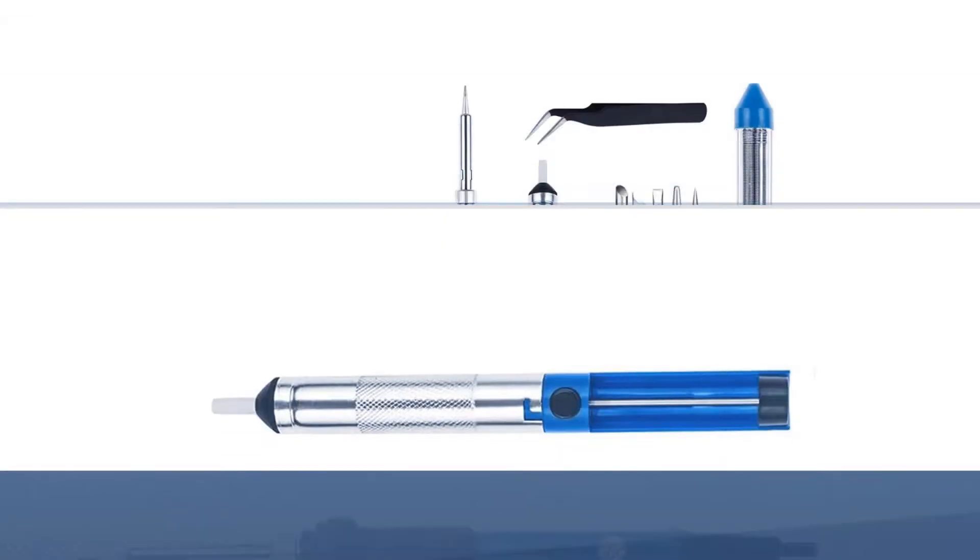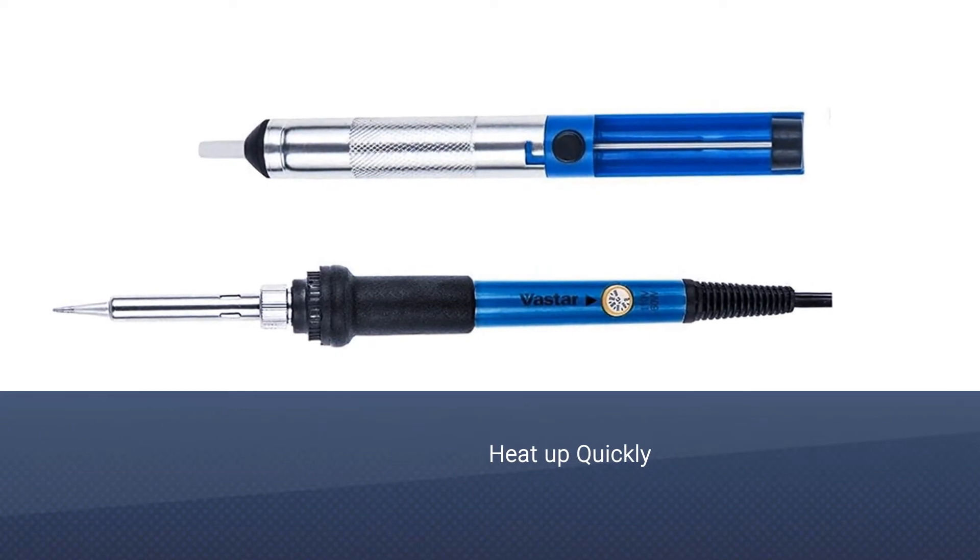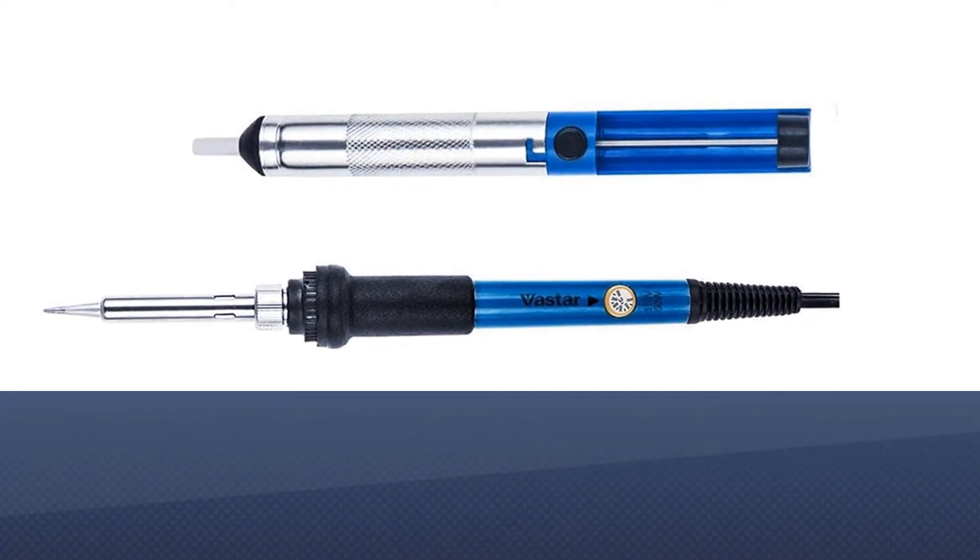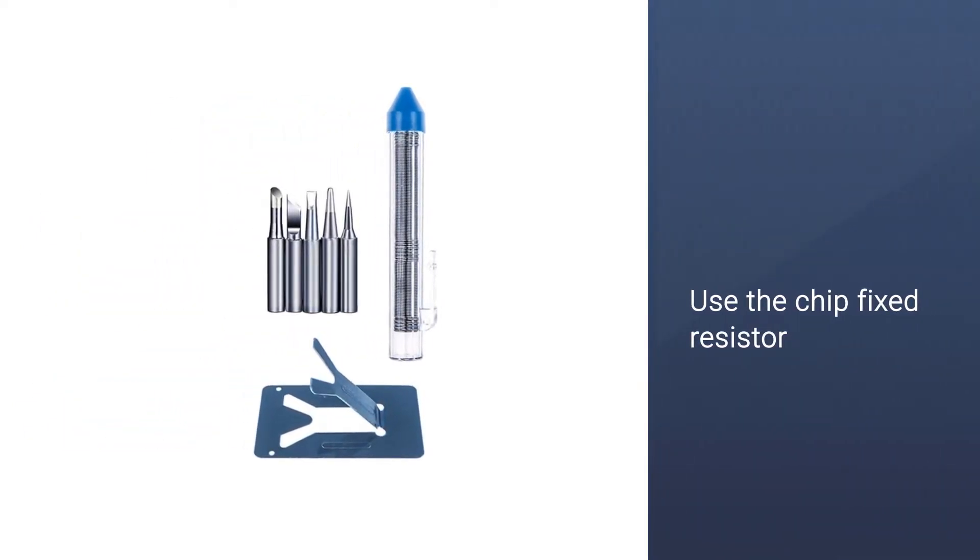If you want to spend less, we recommend the Vast our full set 60W 110 volts soldering iron kit. This adjustable model is the cheapest iron we tested, but it performs well and comes with more accessories than any other, including solder and multiple tip sizes.